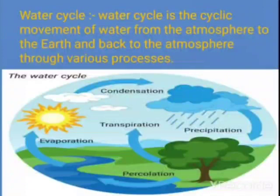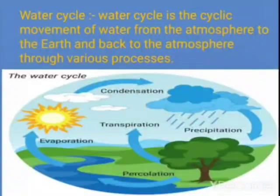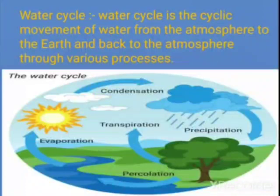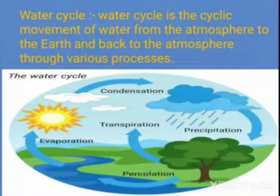Any natural phenomenon which repeats itself after a certain period of time is said to be a natural cycle. In the water cycle, water moves from the earth's surface to the atmosphere and back to the earth's surface. When water from the earth gets evaporated and reaches the atmosphere, and again comes back as rain, this is a cyclic pattern.